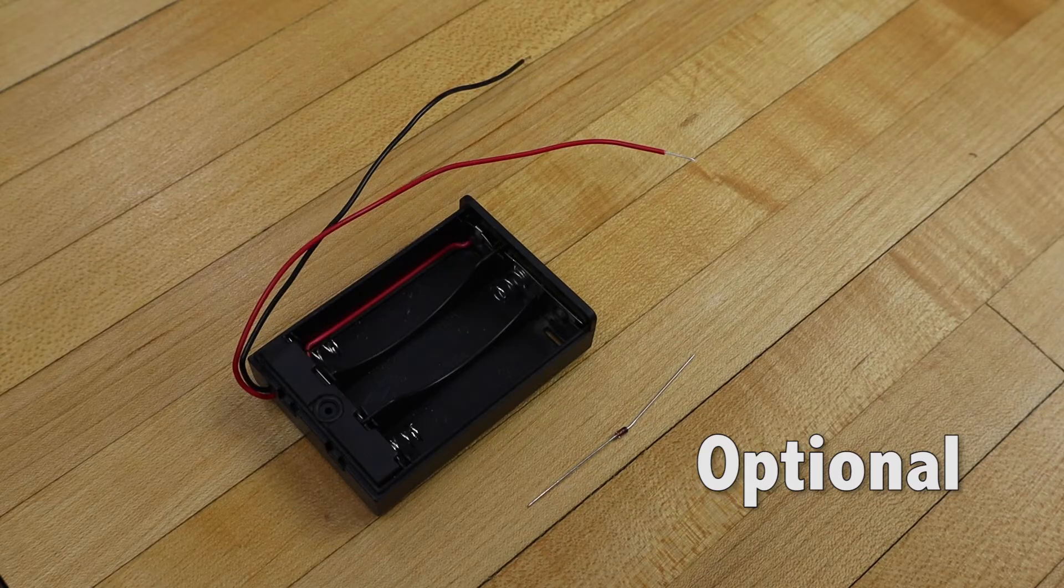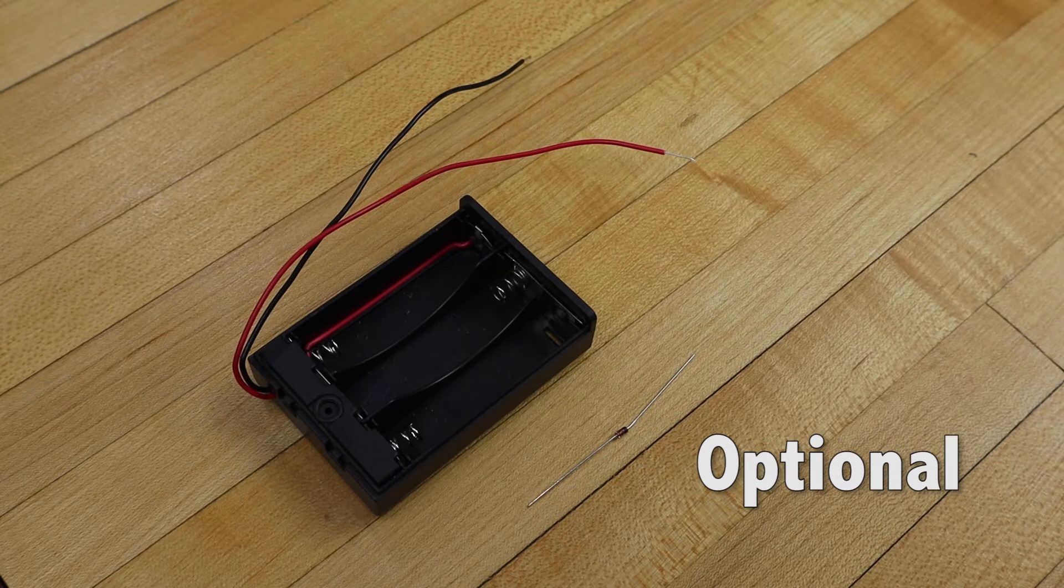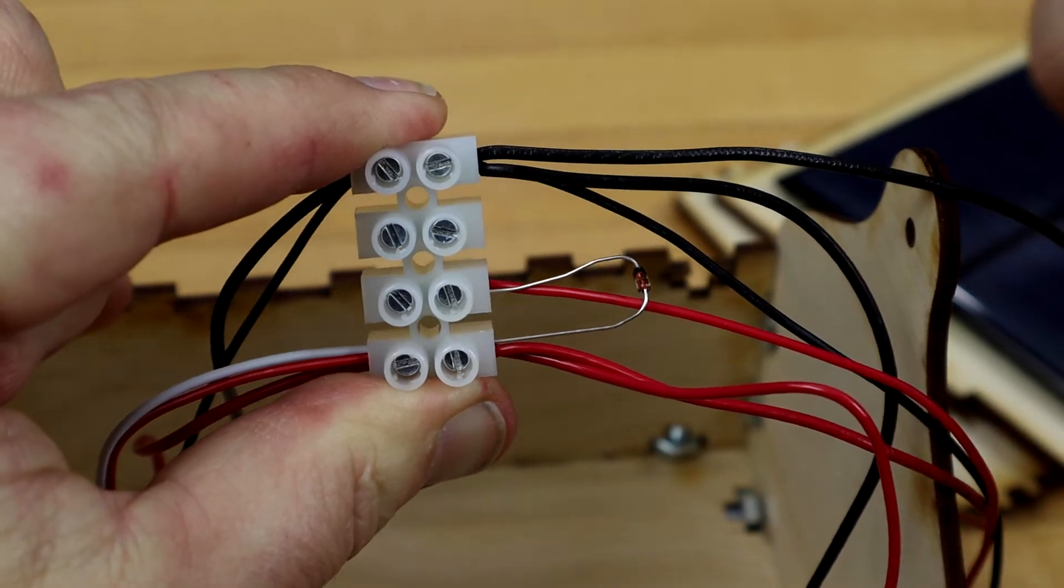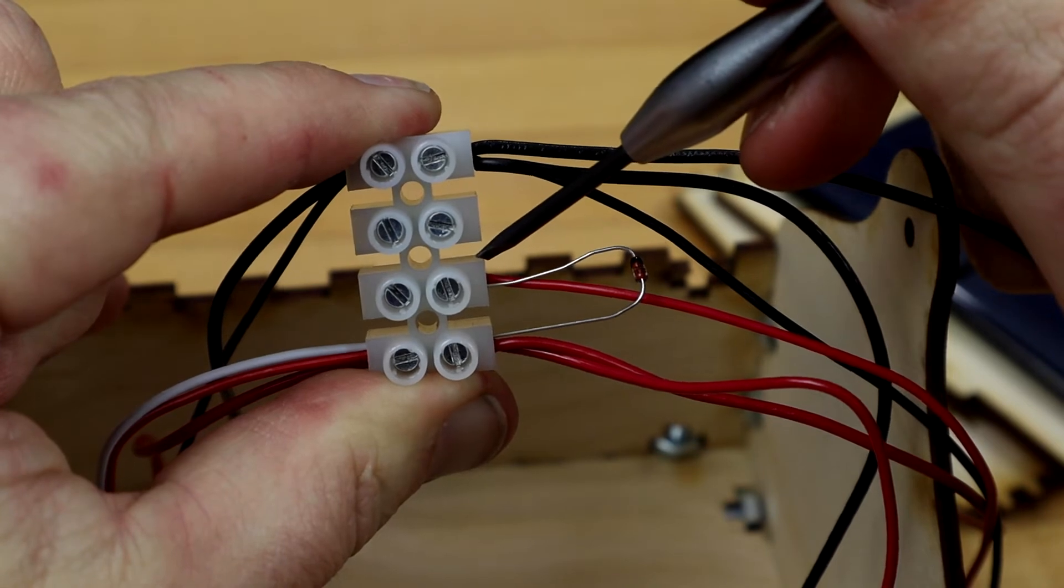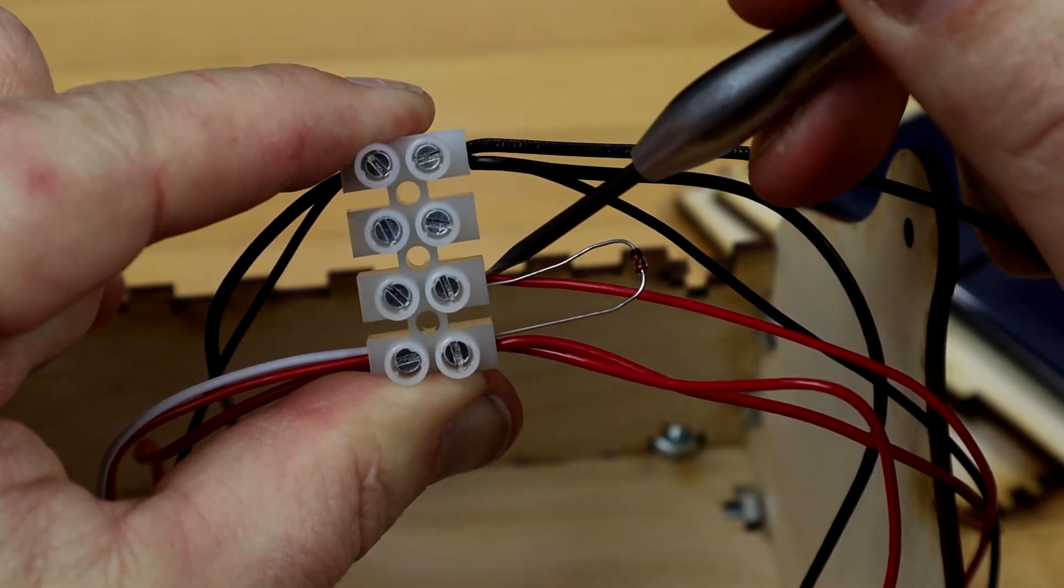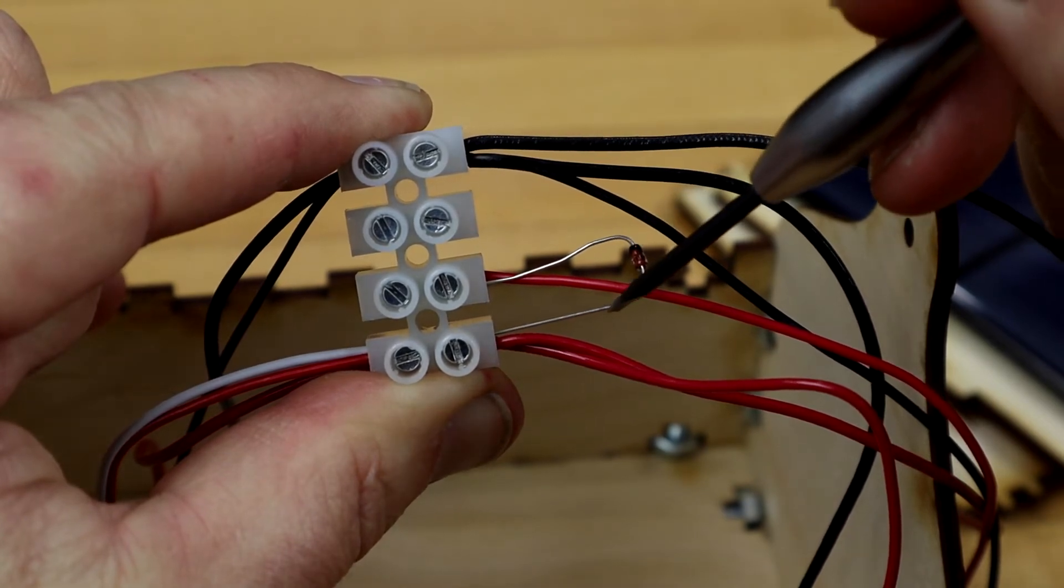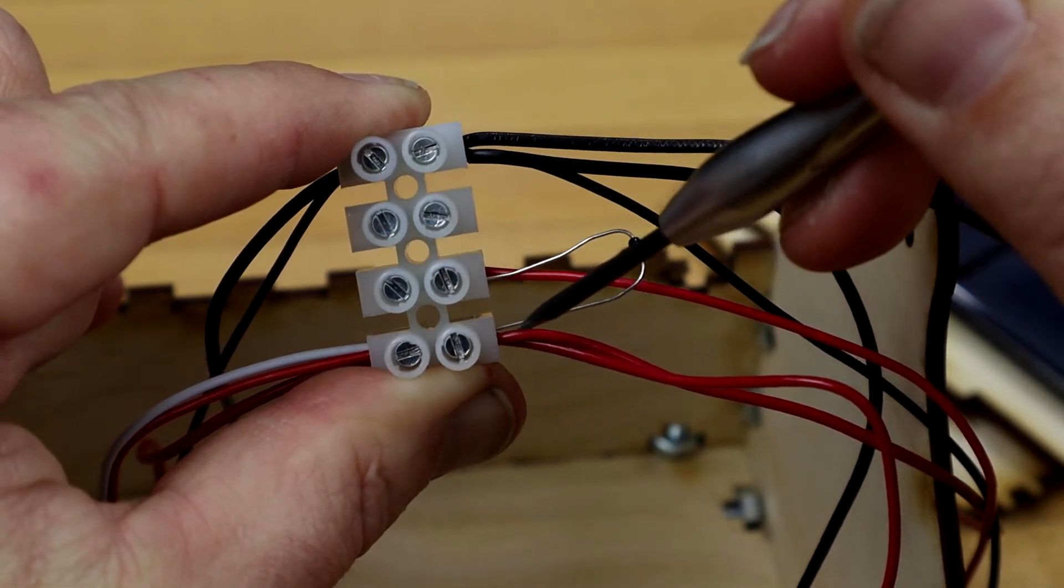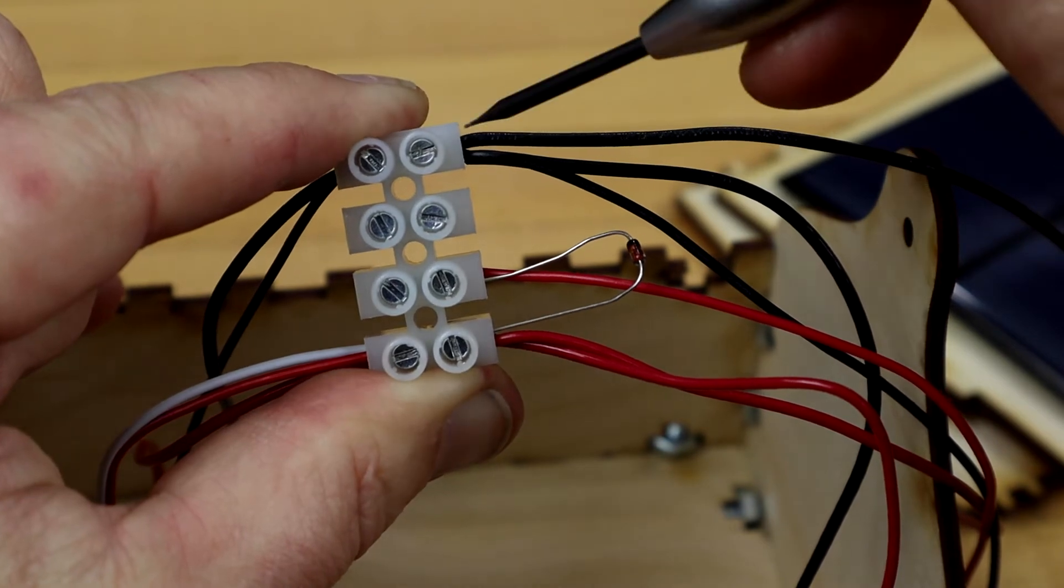If you are using the optional battery holder, there's an additional step. Connect the red battery holder wire together with the black stripe end of the diode into the terminal block. Connect the other end of the diode to the positive wires. Connect the black battery holder wire to the negative connections.